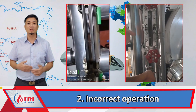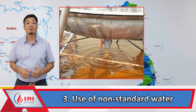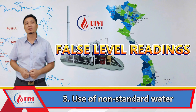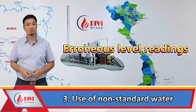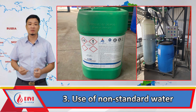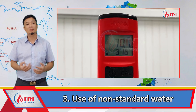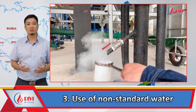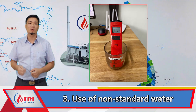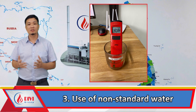Cause 1.3: use of non-standard water. Water containing impurities or untreated water can cause foaming, leading to inaccurate readings on the sight glass. This phenomenon is often referred to as false level readings or erroneous level readings in the thermal industry. This issue can occur when excessive water treatment chemicals are used, causing the pH level in the boiler to rise, resulting in foaming and inaccurate readings. This can be easily detected by observing the blowdown water — if the water appears milky white, it usually means excessive chemicals have been added, causing foaming and heavy water carryover into the steam, which negatively affects production.